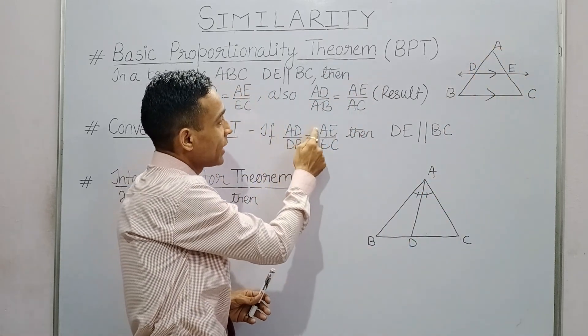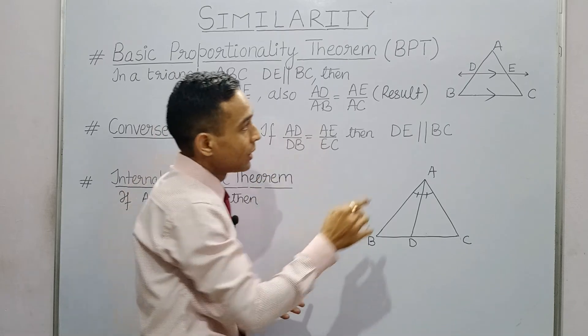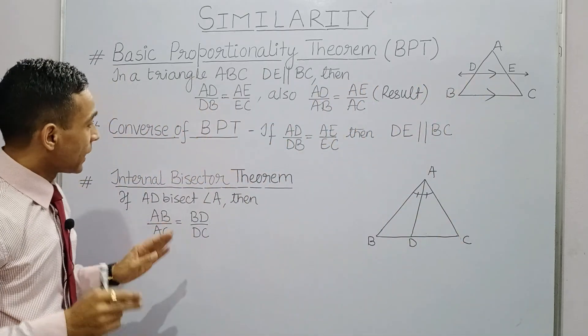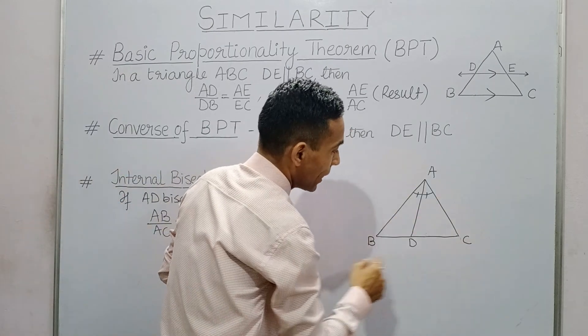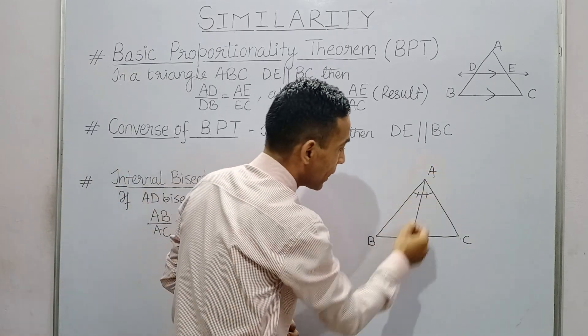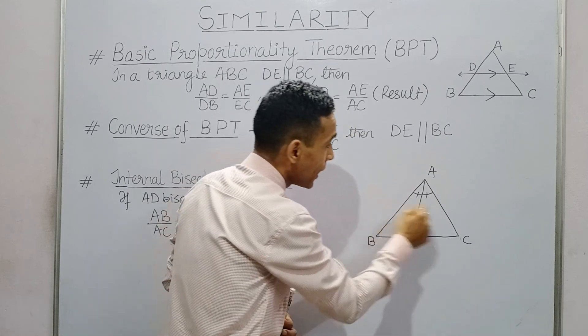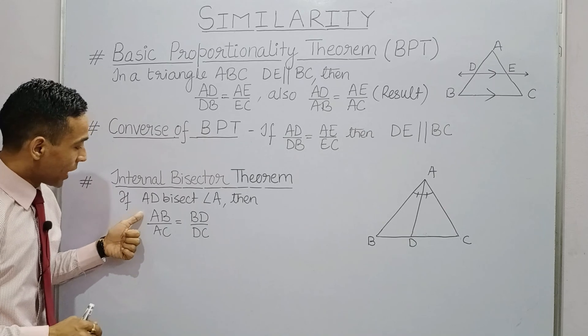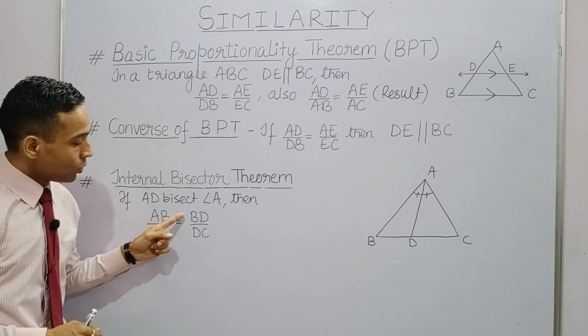Last is Internal Bisector Theorem. If AD is the angle bisector of angle A in triangle ABC, then AB upon AC is equal to BD upon DC.